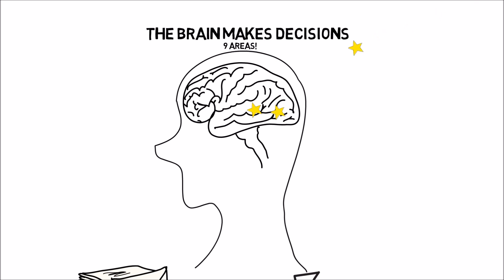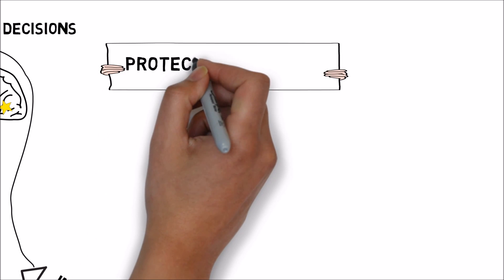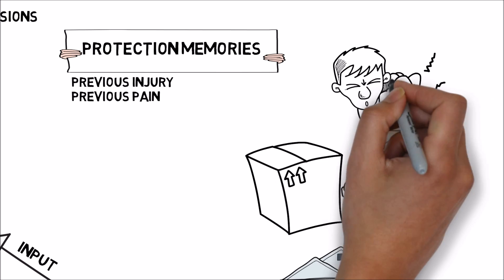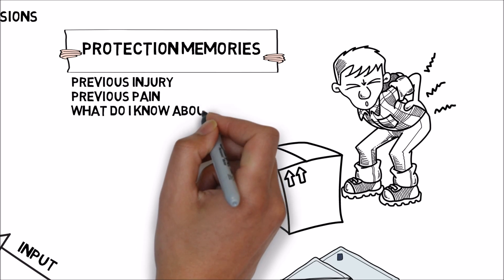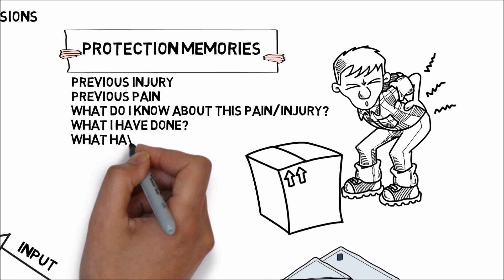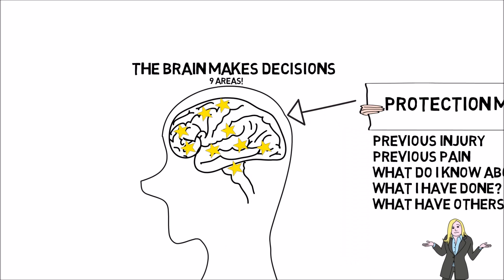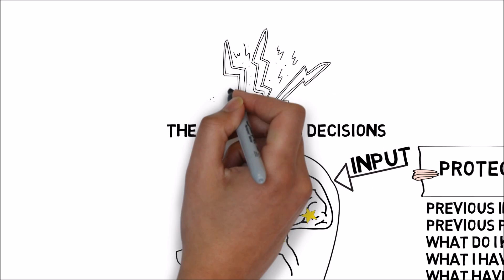Environmental information becomes an input which the brain must analyze in nine different areas. These nine areas work together to make decisions about incoming information. Over time, they can also develop scripts or programs which become memories — including protection memories. Protection memories look at previous injury, previous pain — and pain and injury are not totally related, they can be but don't have to be. They also look at your thoughts and beliefs: what do I know about this pain or injury? What has helped or not helped? These protection memories become chemistry, electricity, nerve impulses — inputs back into the brain, reviewed every time new information comes in.